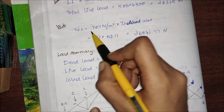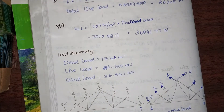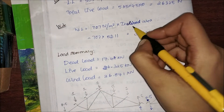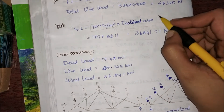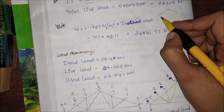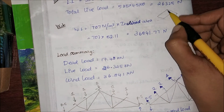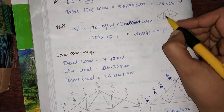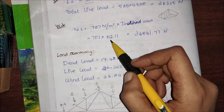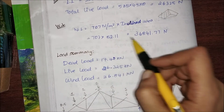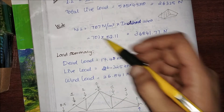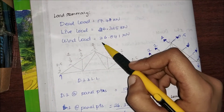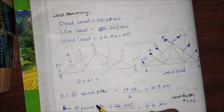Next is the wind load. The wind load calculation — we already found it is 707 newton per meter square after the pressure coefficients, and that is multiplied into the inclined area. So if this is my truss, this is my inclined area, and my inclined area is 52.11. Therefore I have found all my dead load, live load, and wind load — this is my summary.